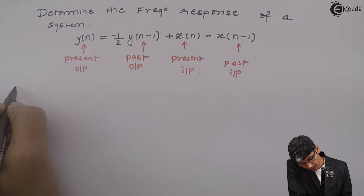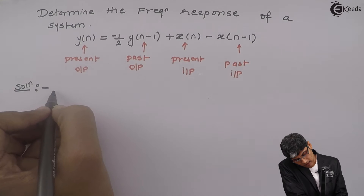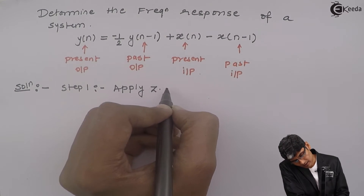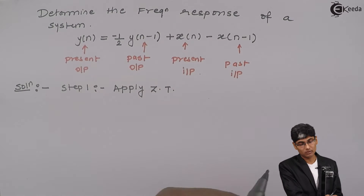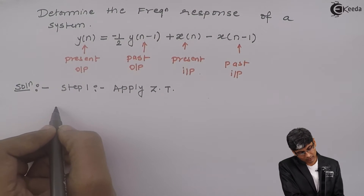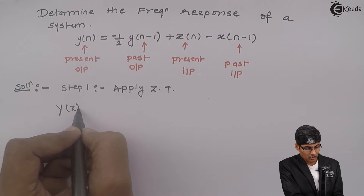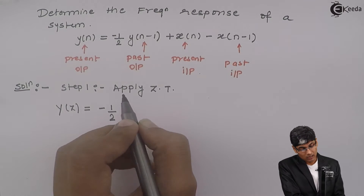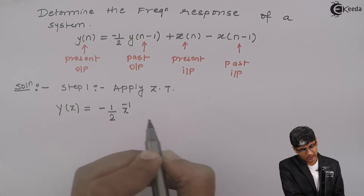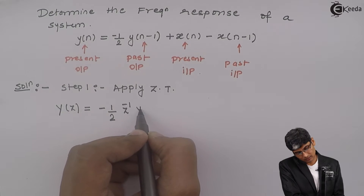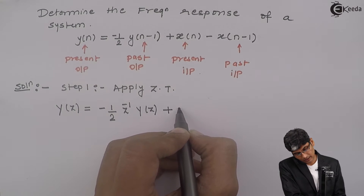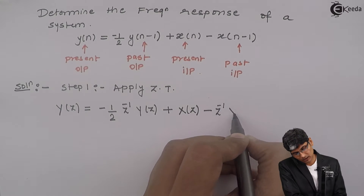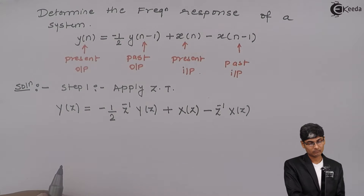Now to proceed for the solution, Step 1: let us apply the Z-transform to the given problem. When we apply the Z-transform, I replace y(n) by Y(z), the term with n-1 is multiplied by z⁻¹ giving Y(z), plus X(n) is replaced by X(z) minus z⁻¹ X(z).